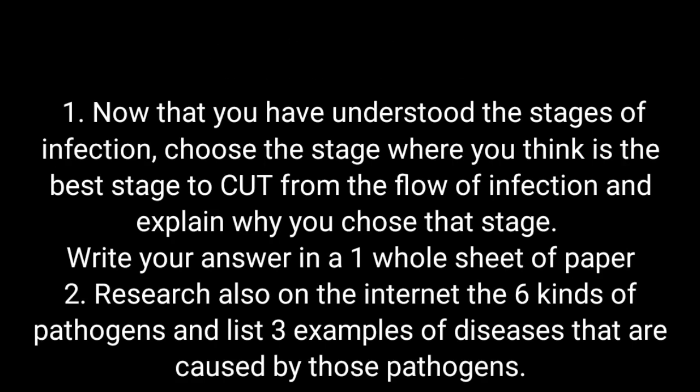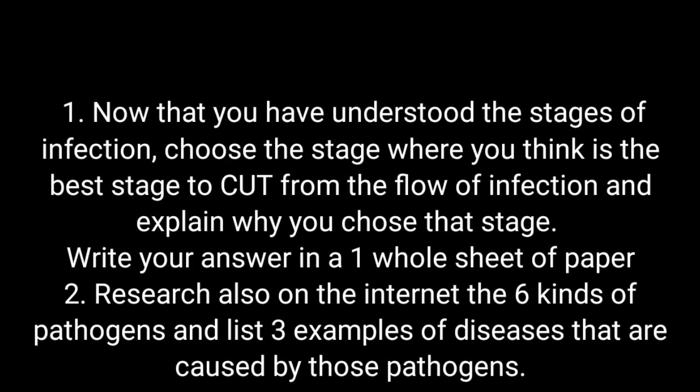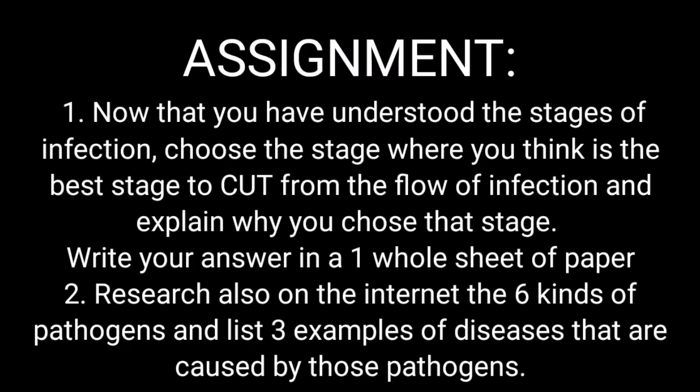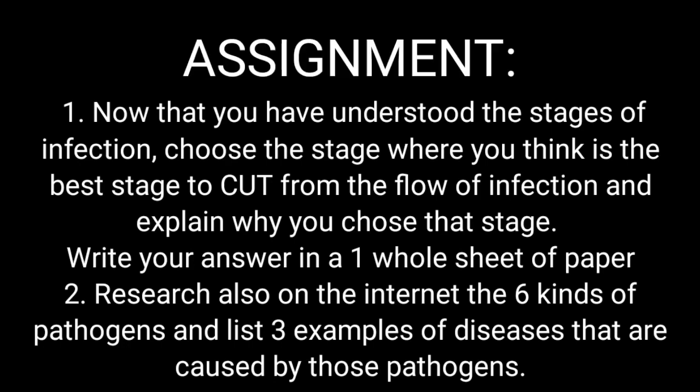Assignment: Number one — now that you have understood the stages of infection, choose the stage where you think is the best stage to cut from the flow of infection and explain why you chose that stage. Write your answer on one whole sheet of paper. Number two — research on the internet the six kinds of pathogens and list three examples of diseases caused by those pathogens.